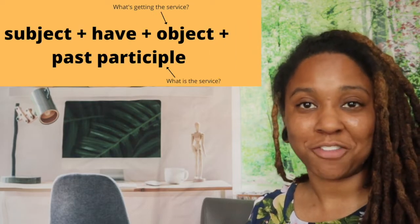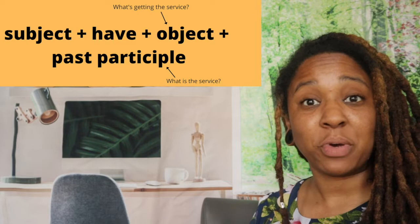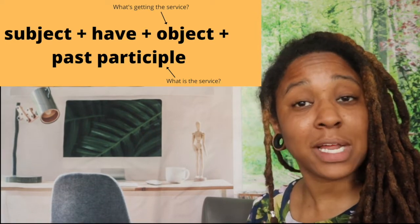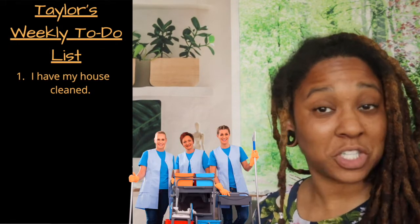This is the structure for have something done. We put the subject, plus have, plus the object, plus the past participle. For example, right now I clean my house myself. But when I get rich, I am going to pay someone else to do it. So I could say: I have my house cleaned — I is the subject, my house is the object, and cleaned is the past participle.